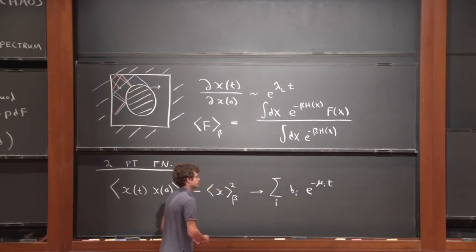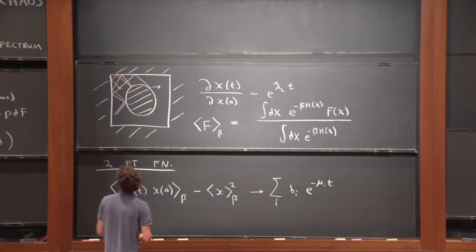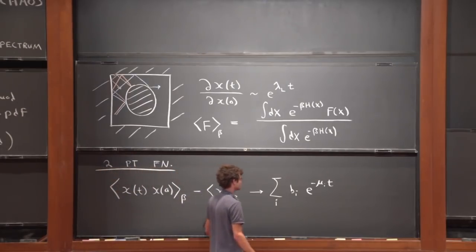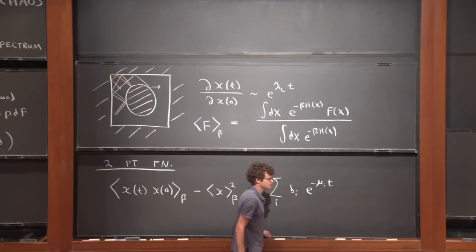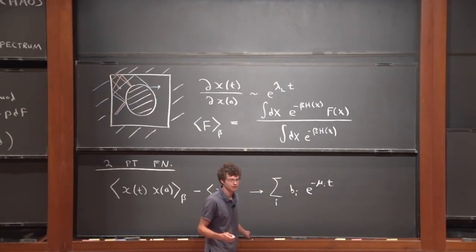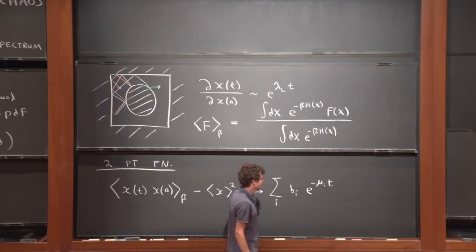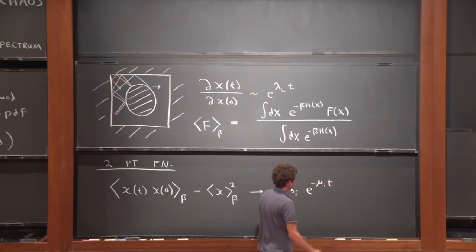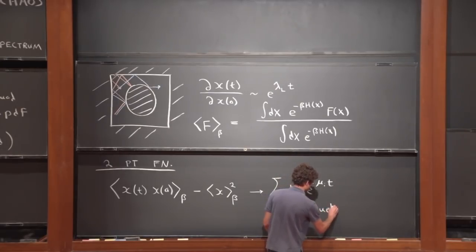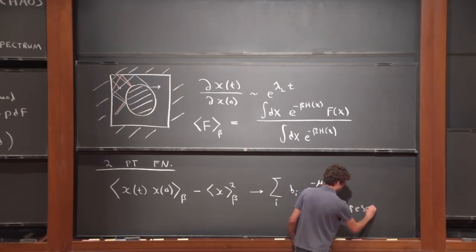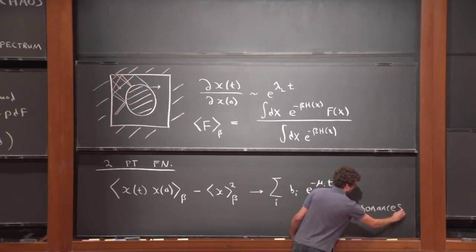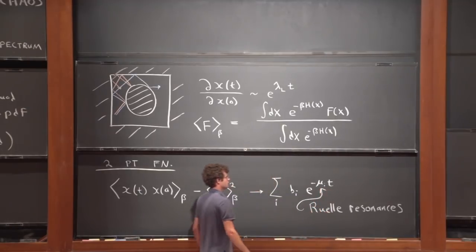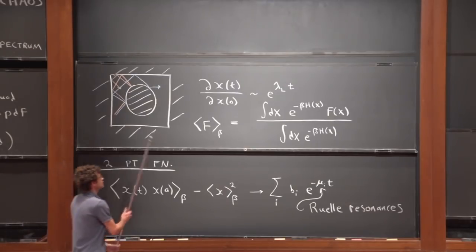In chaotic theories, the late-time behavior of this two-point function is a spectrum of exponential decays, where these parameters mu_i — known as Ruelle resonances — determine the spectrum of exponential decays of these autocorrelation functions.